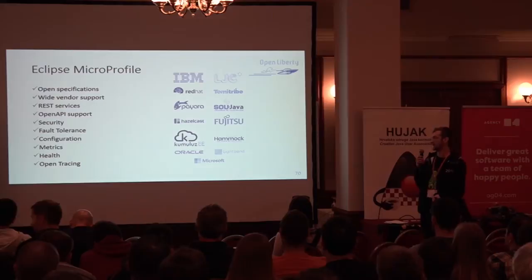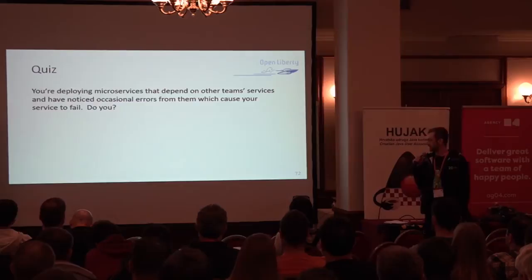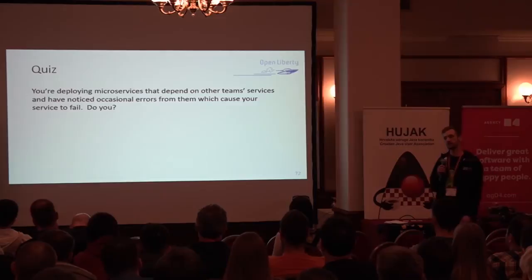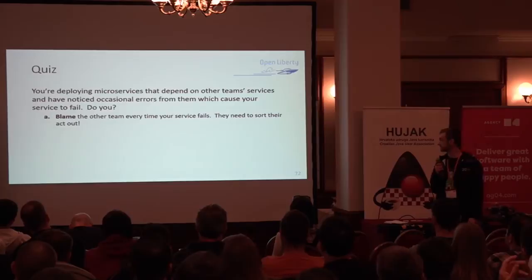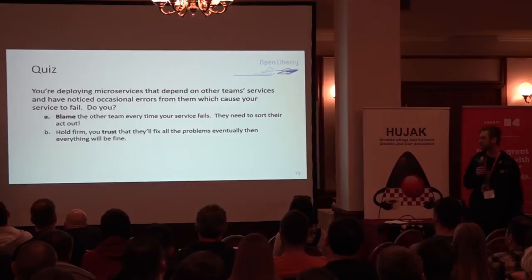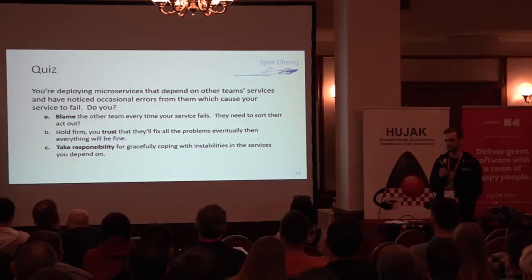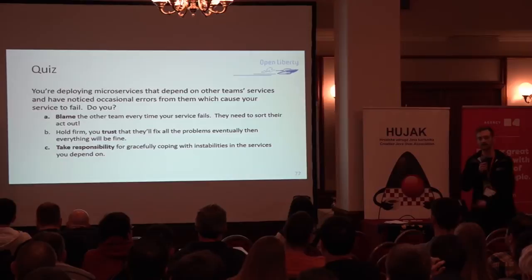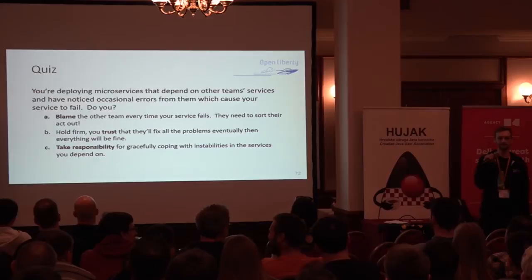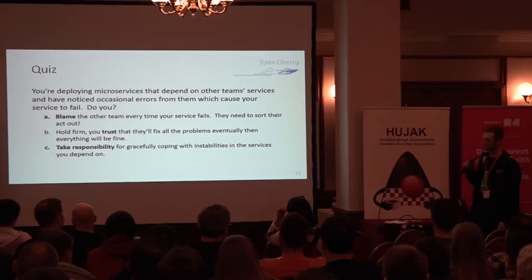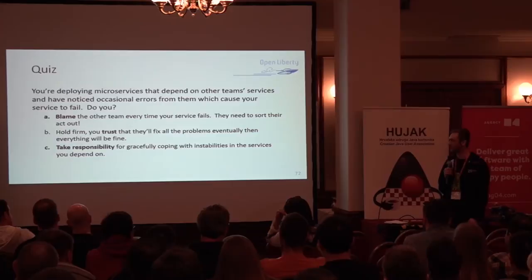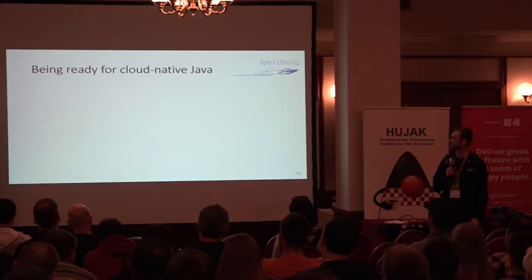All the things we went through — REST services, OpenAPI support, security, fault tolerance, et cetera. A little quiz: you're deploying microservices that depend on other teams and you've noticed some errors causing your microservice to fail. Do you blame the other team, hold firm and wait, or take responsibility for coping with these problems so you don't have to rely on other teams? Personally I would go for A and C — go shout at the other team, but also code into your microservice the ability to cope with these problems.